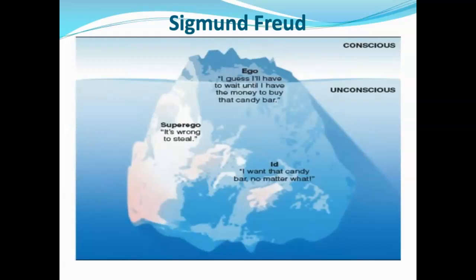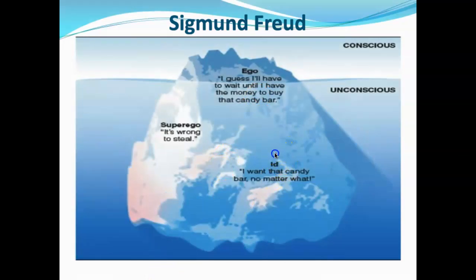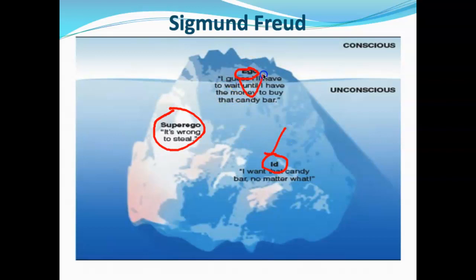Another component of Freud's theory is the unconscious processes. He said we have three components of our psyche constantly working, mostly outside our awareness. These three components — the id, the ego, and the superego — are in constant conflict. The id and ego are present from birth; the superego develops in the latency stage.